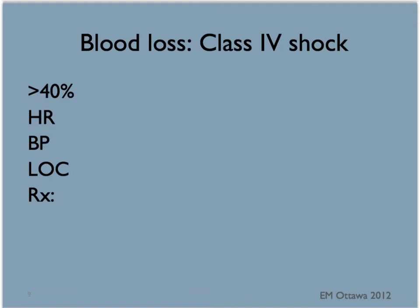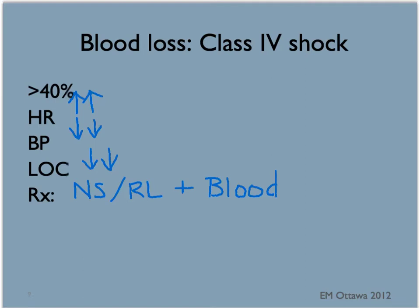When more than 40% of the blood volume is lost, the patient is in class 4 shock. The heart rate again will be fast, the blood pressure low, and now the patient would be obtunded instead of merely being confused or agitated. For this patient, crystalloids and blood would also be given until the vital signs and the level of consciousness start to return to normal.